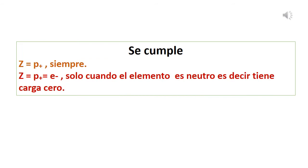Hay aspectos que deben cumplirse siempre. Z siempre es igual al número de protones. También podemos decir que Z es igual al número de protones igual al número de electrones, pero esto solo cuando el elemento es neutro, es decir, cuando tiene carga cero. De lo contrario, hay que revisar si el elemento está perdiendo o ganando electrones según la carga, por lo que en esos casos los electrones ya no van a ser iguales a Z.